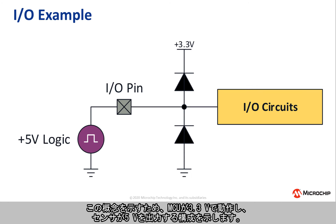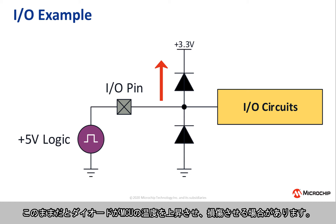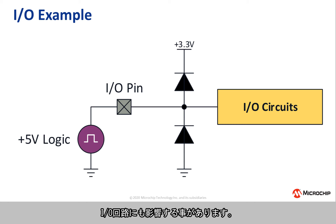To show this concept, consider this configuration where the microcontroller runs at 3.3V and the sensor outputs 5V levels. The diode connected to the positive power supply is forward biased and begins to conduct. If left unchecked, the diode may heat up and damage, or even destroy part of the microcontroller. There may be other effects on the IO circuits as well.